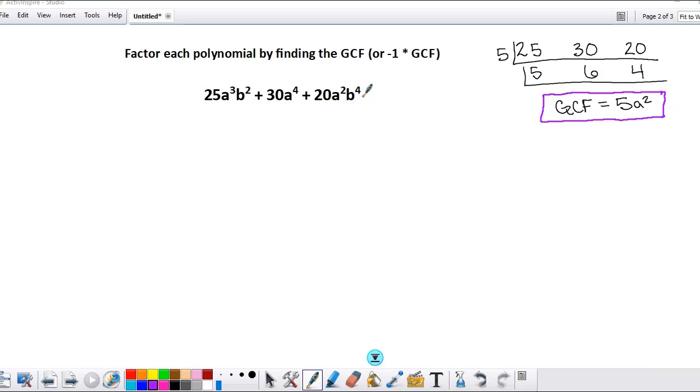So we are now being asked to take that greatest common factor and use it to write this polynomial as two factors. Our final answer will look something like this: we will have the greatest common factor that is one factor of this polynomial, and then we'll have a set of parentheses. The other factor of this polynomial is the answer we got when we divide out the greatest common factor.